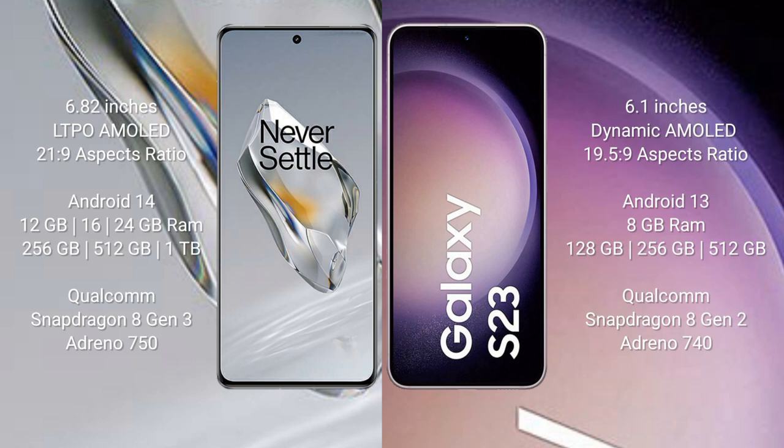OnePlus 12 comes with 12GB, 16GB, or 24GB RAM, and 256GB, 512GB, or 1TB internal storage. It features a Qualcomm Snapdragon 8 Gen 3 processor and Adreno 750 GPU.